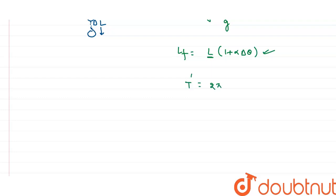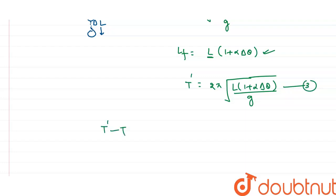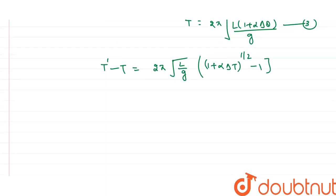So T' = 2π√(l(1 + α·Δθ)/g). Subtracting equation one from this, T' - T = 2π√(l/g) · [(1 + α·Δθ)^(1/2) - 1]. Applying the binomial theorem — when (1 + x)^n with x much less than 1 approximates to 1 + nx — we get T' - T = 2π√(l/g) · [1 + ½α·Δθ - 1].